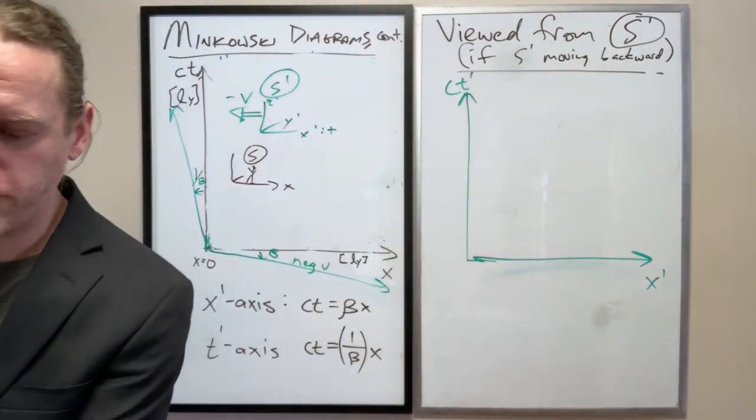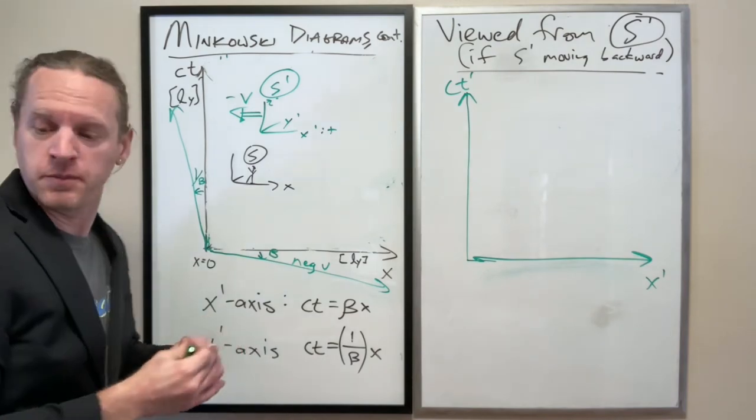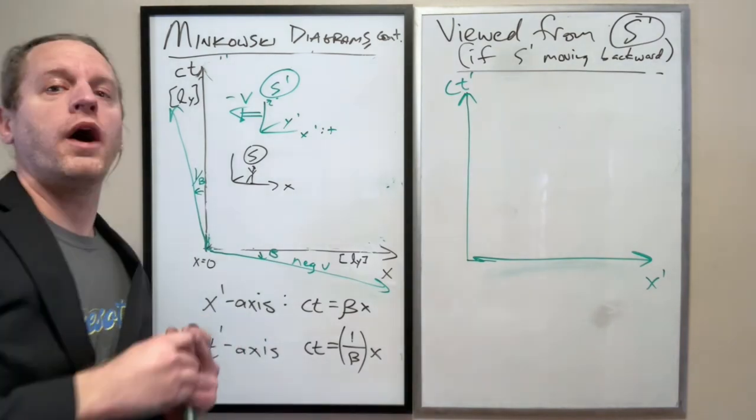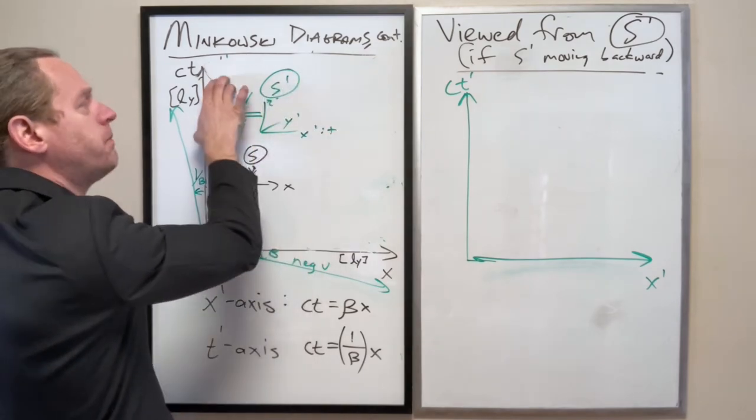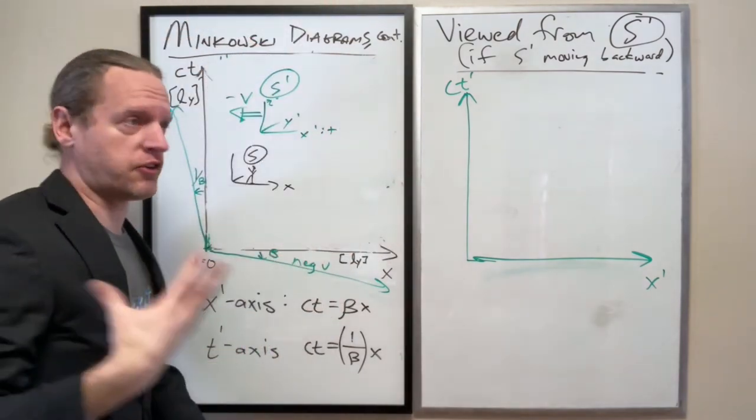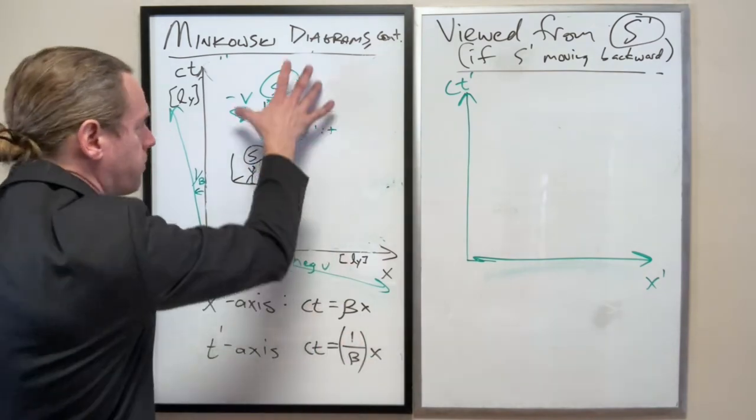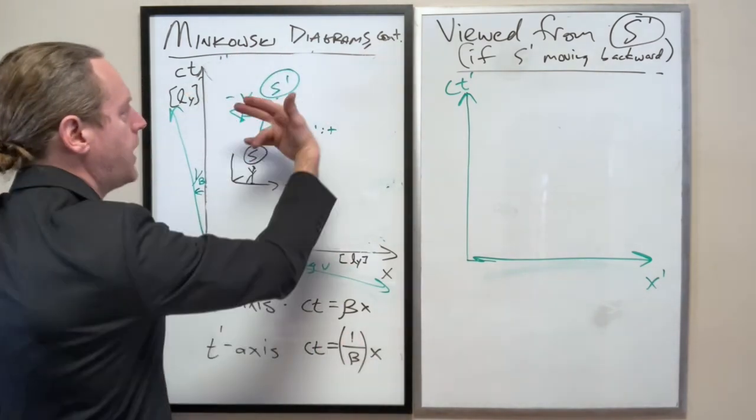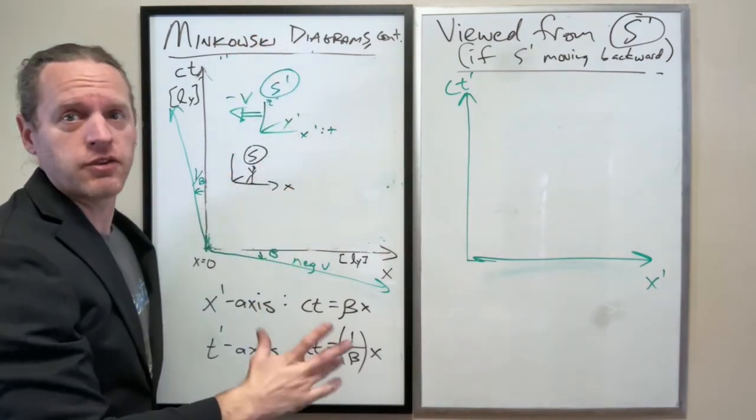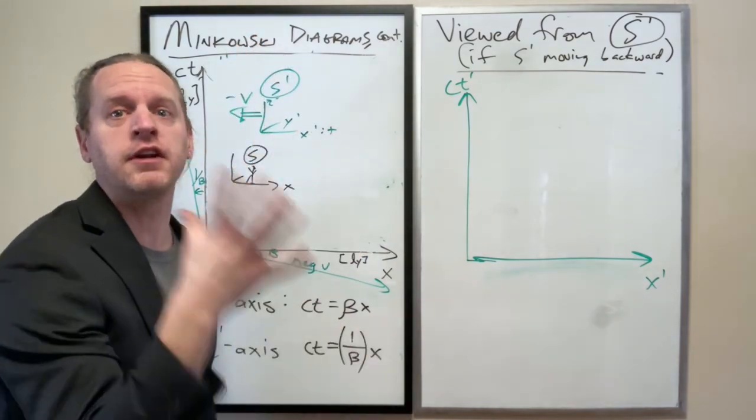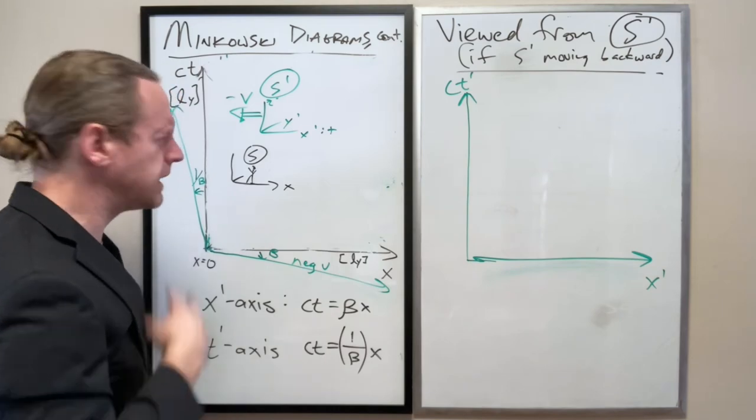If we want to do the Lorentz transformations, what you're going to end up finding is that if s-prime was already moving backwards and then if we do the inverse transformations again or from that frame into the s, that backwards velocity, the negative sign for that will cancel the negative sign from doing the inverse transformation in the first place.